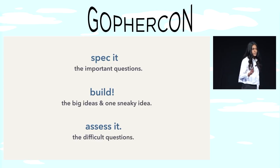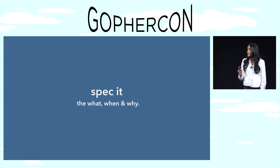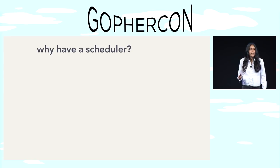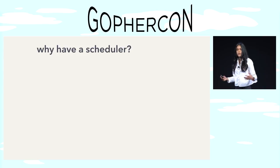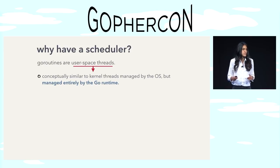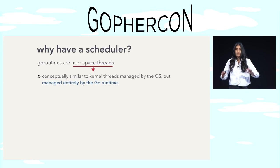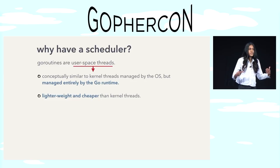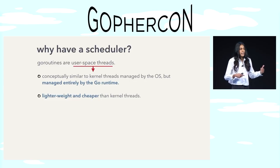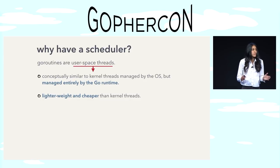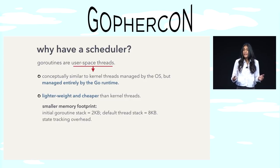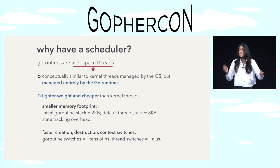Let's start with what is perhaps the most important question of any engineering project: why? Why are we building it? Why does Go need a scheduler? And the answer is because Go uses Go routines, and Go routines are what we call user space threads. They're conceptually similar to threads — technically called kernel threads — but the big difference is that they're managed entirely by the Go runtime. Go chose to use these user space threads because they can be implemented to be more lightweight and faster. Go routines have a smaller memory footprint than kernel threads, and they're a lot faster to create, destroy, and context switch between.